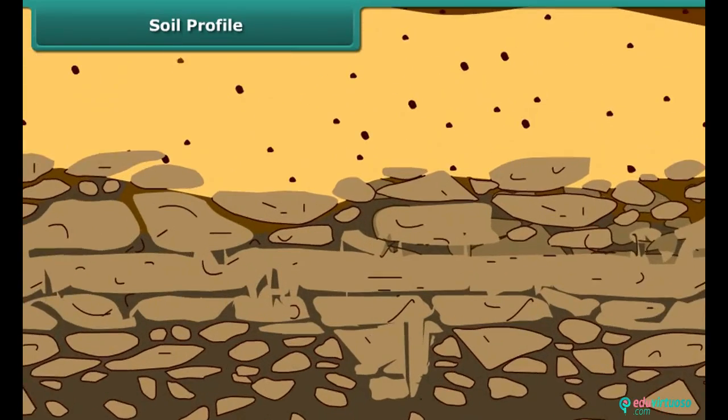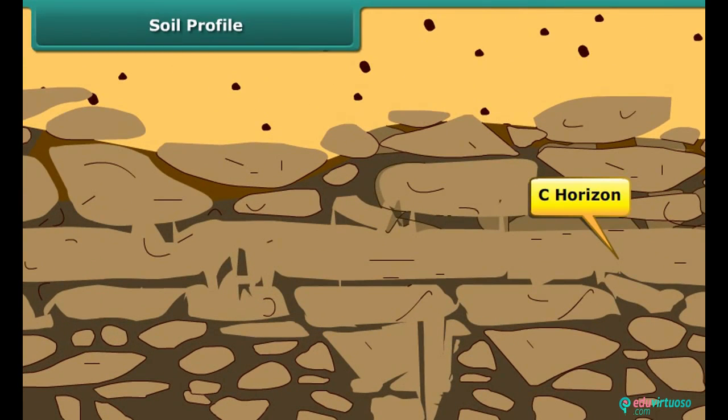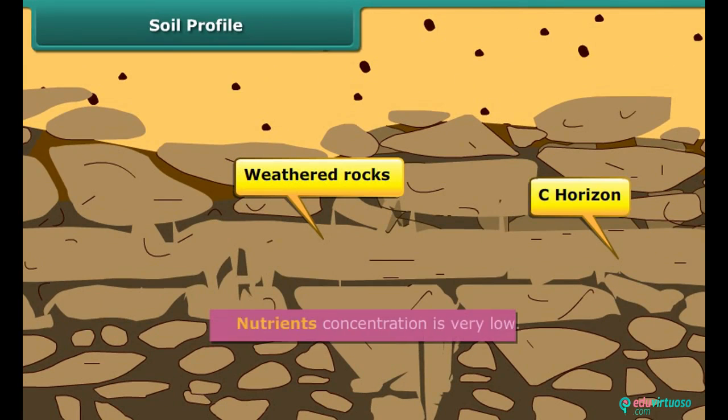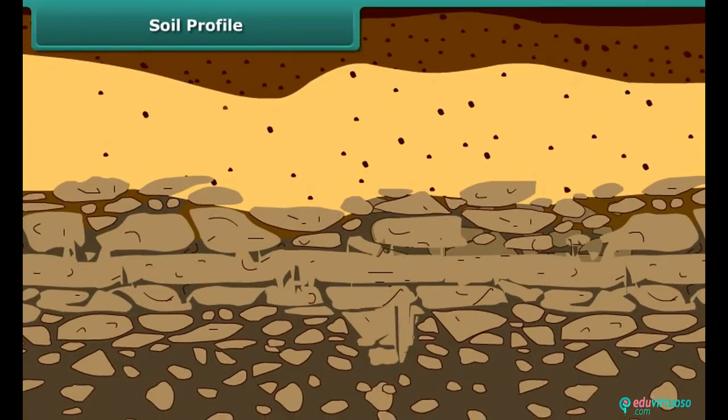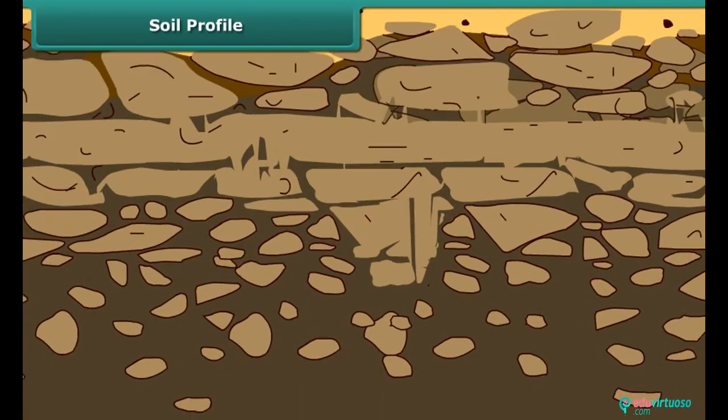Fourth layer is the C horizon. This layer is rocky and made up of weathered rocks. Nutrients concentration is low in this layer. The final layer is made of solid rocks and commonly known as bedrock.